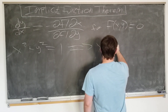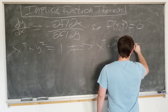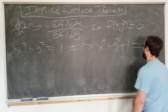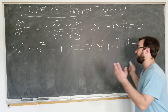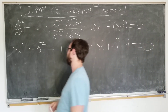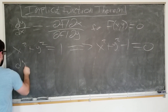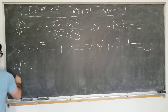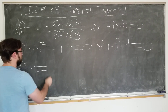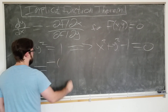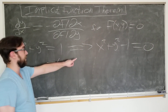x squared plus y squared minus one equals zero. Obviously this is now f. So we can just go ahead and plug it in: dy/dx is equal to minus the partial with respect to x.